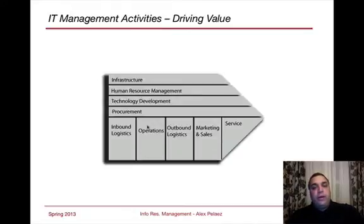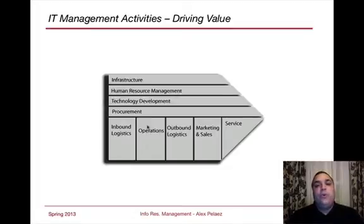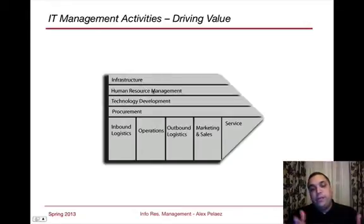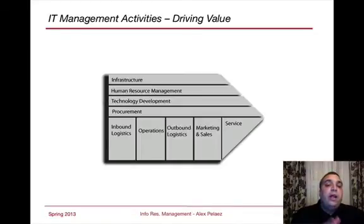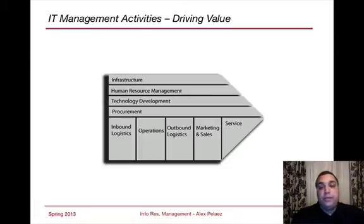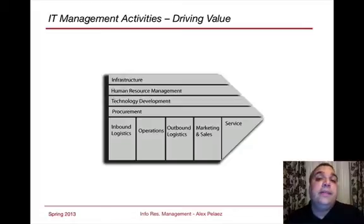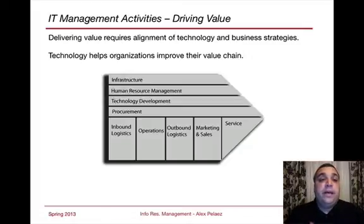In terms of driving value — and you may have seen this in some of your other classes — this is the value chain. IT can impact the core value activities at the bottom, and the ancillary items are the infrastructure, human resource management, technology development, and procurement. These are management activities that basically help each one of the core activities occur. We want to make sure we can procure the right marketing and sales application, the right service application, the right HRIS application, and that it all sits on a core infrastructure utilized by everyone.